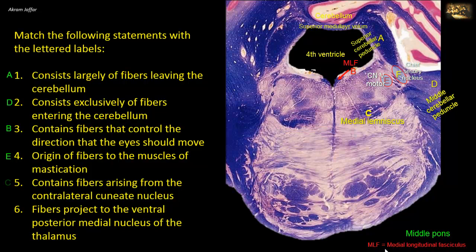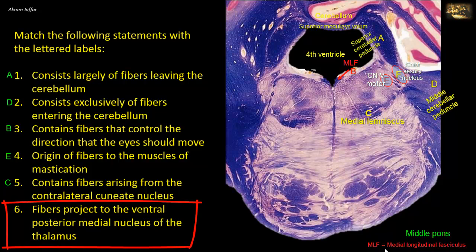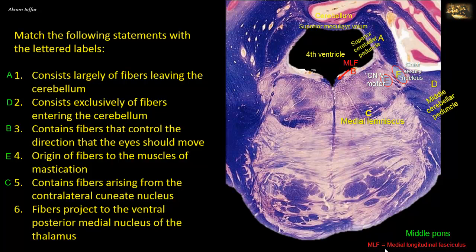C matches with statement 5. The fibers of the medial lemniscus project specifically to the ventral posterior lateral nucleus of the thalamus. On the other hand, fibers that project to the ventral posterior medial nucleus of the thalamus, as in statement 6, originate from the trigeminal sensory nuclei — specifically the principal or chief sensory nucleus of the trigeminal, located lateral to the motor nucleus and represented here in F.